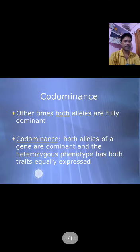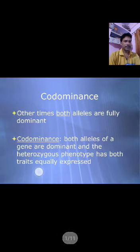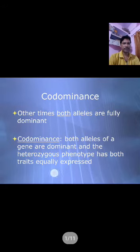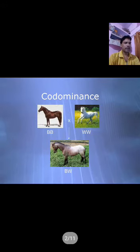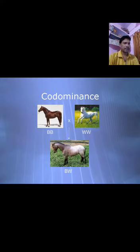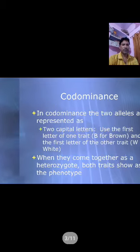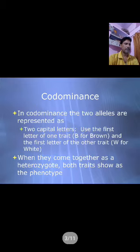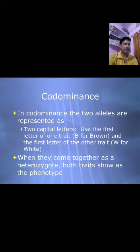The best example of codominance is the ABO blood group. ABO blood group is controlled by gene I, which has three alleles: A, B, and O. The O allele is recessive to both A and B. The A and B alleles are codominant with each other. When a person has both A and B, they have type AB blood.